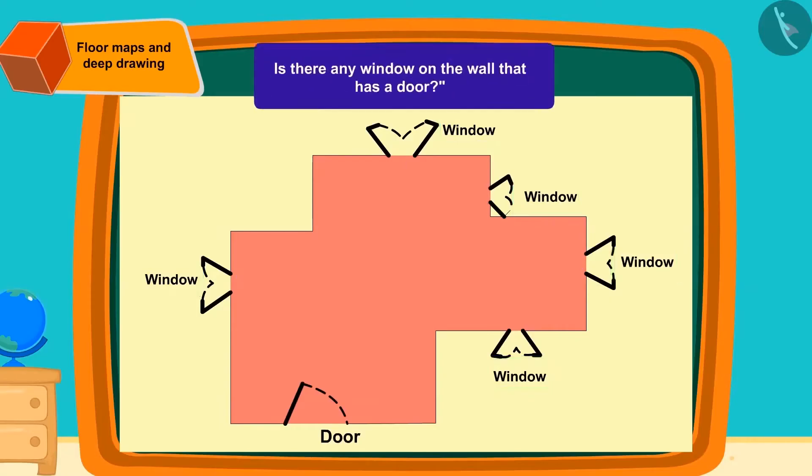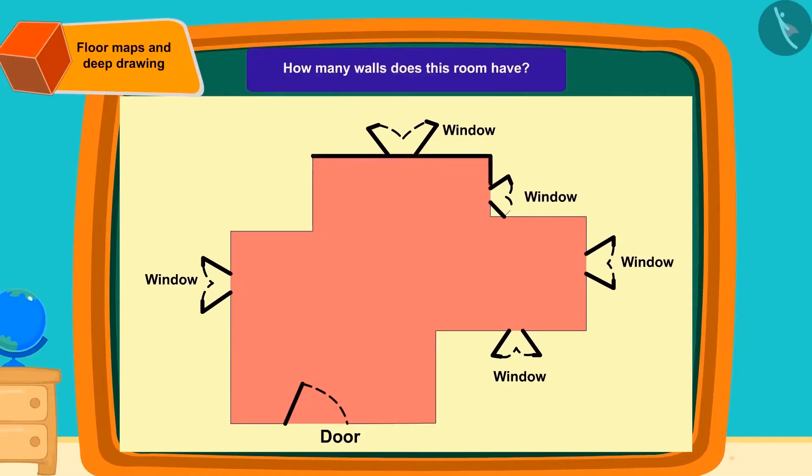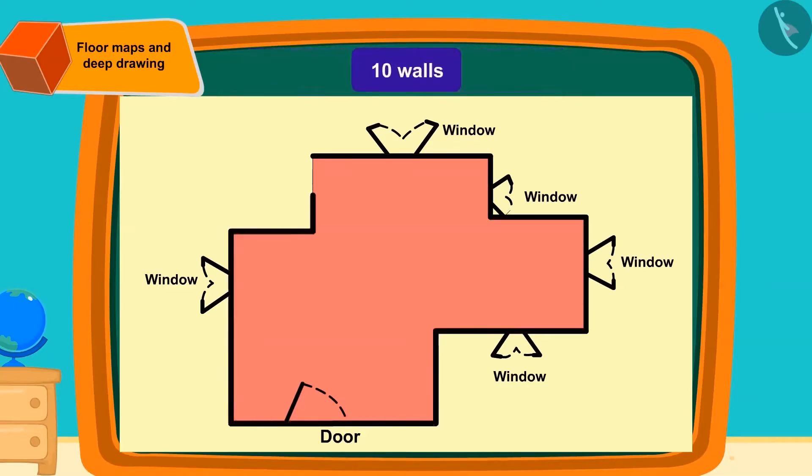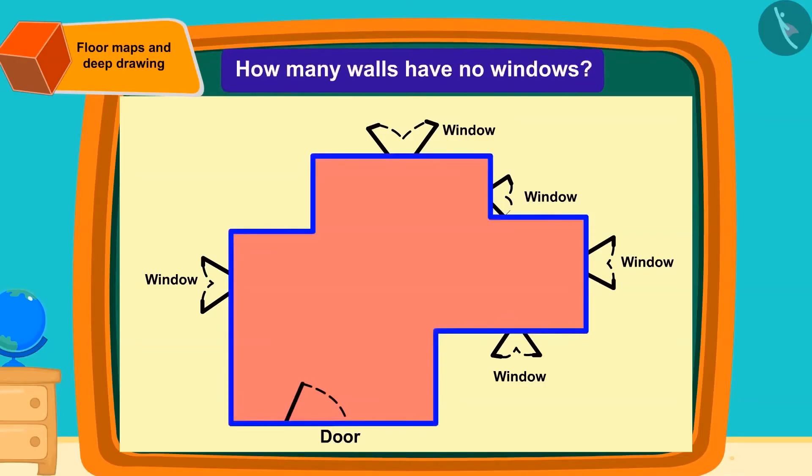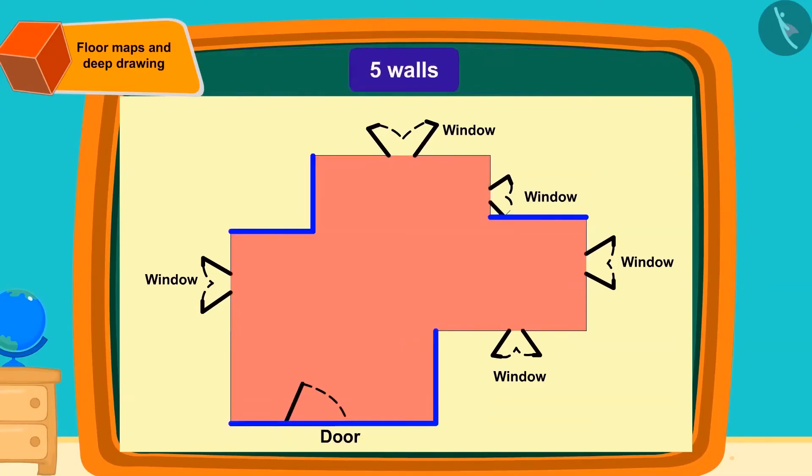Is there any window on the wall that has a door? Exactly, there is no window in the wall where the door is. How many walls does this room have? Right, this room has 10 walls. How many walls are there in this room with no windows? There are five walls with no windows.